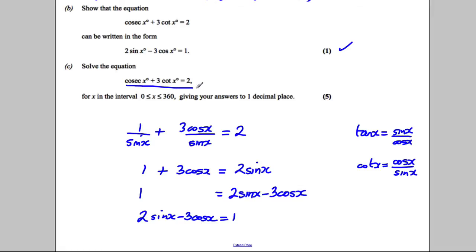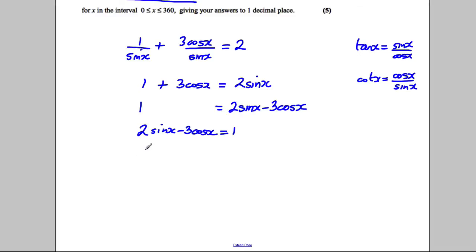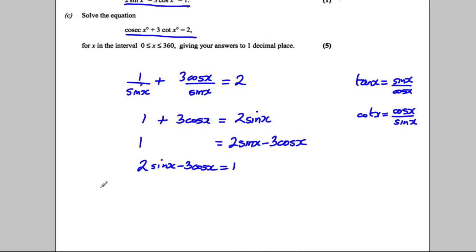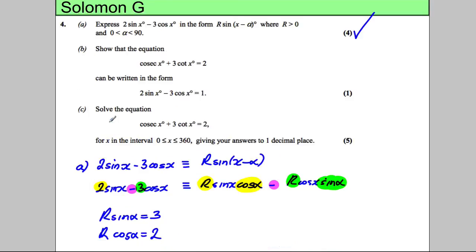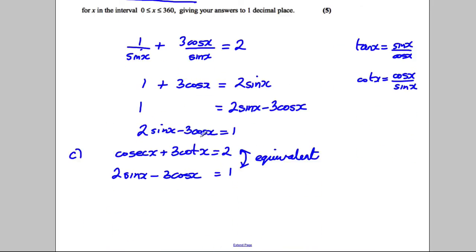Now we're asked to solve this equation being equal to 2. This equation we said is the same as this equation, they are equivalent to each other. So instead of solving cosec x plus 3 cot x equals 2, we're going to solve 2 sine x minus 3 cosine x equals 1. Now they are equivalent. Solving one gives me the answer to the other. Obviously looking at this question, this was an R sine alpha method so we're going to use the R sine format to solve this.